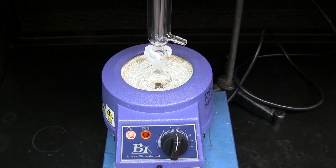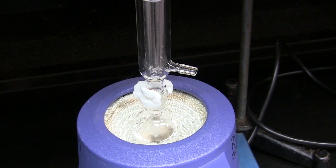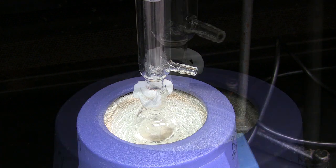Heat the reaction mixture to reflux. The alkene product will begin to form soon after boiling begins and will distill over as an azeotrope with water.